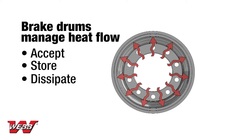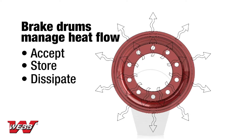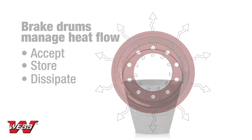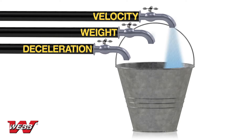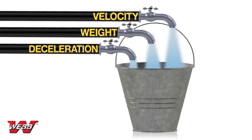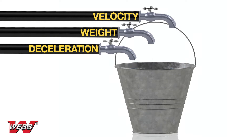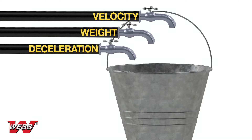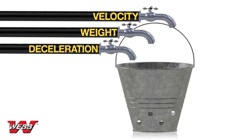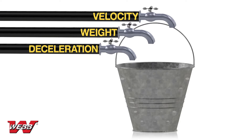It is the responsibility of the brake drum to manage this heat. To function properly, it must accept the heat, store it, and dissipate it. Think of a braking event in terms of a bucket being filled with hot water. The water flowing into the bucket represents the amount of heat generated by the braking event. The size of the bucket represents the heat capacity of a brake drum, and the holes in the bucket represent heat flow out, or the cooling technology of a brake drum.